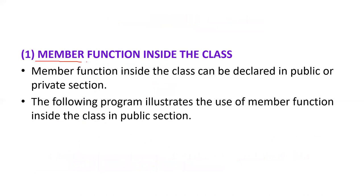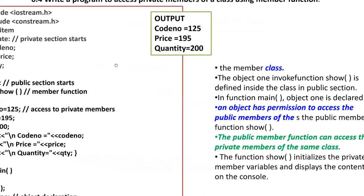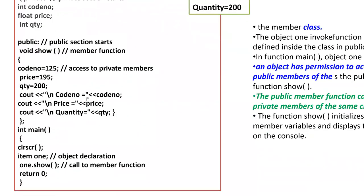The first point on member functions inside the class: they can be declared in the public or private section. This is an example of a program to access private members of a class using a member function. You can see the values of the class through the function.